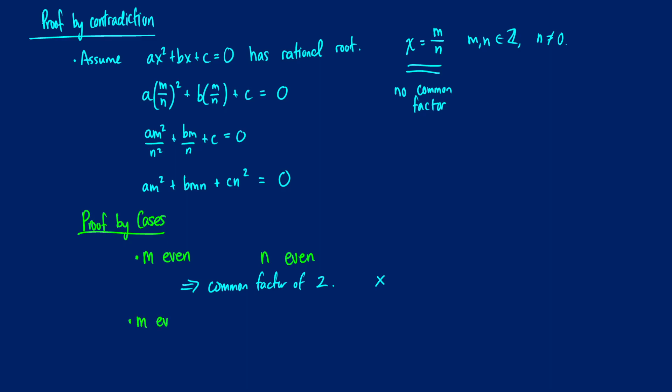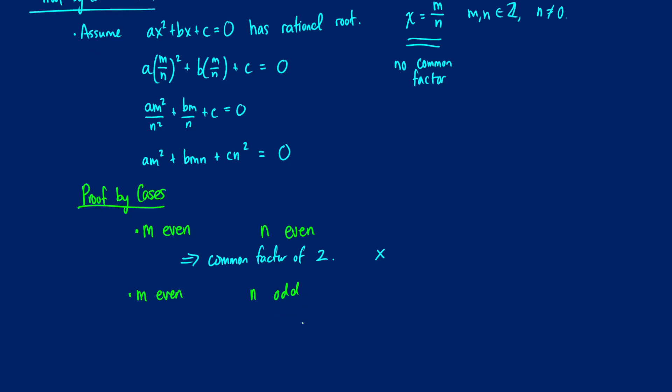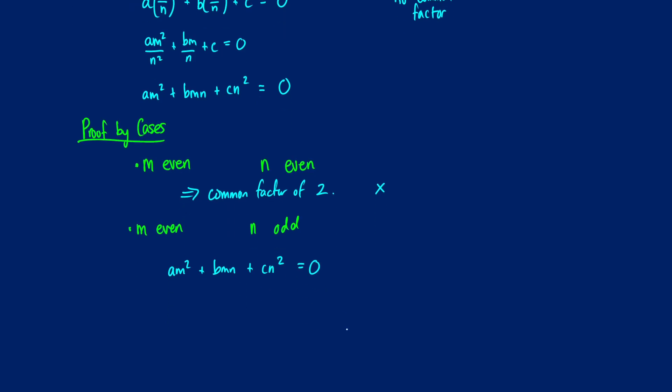What about if m is even and n is odd? So let's think about this. Well, if we take a look at our formula, am squared plus bmn plus cn squared equals 0, and we ask ourselves what is going to happen here?